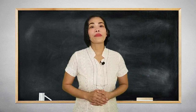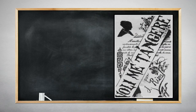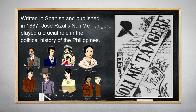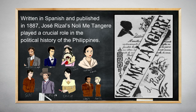Let's study Noli Me Tangere by Jose P. Rizal. Written in Spanish and published in 1887, Rizal's Noli Me Tangere played a crucial role in the political history of the Philippines. Drawing from experience, the conventions of the 19th-century novel, and the ideals of European liberalism, Rizal offered a devastating critique of a society under Spanish colonial rule. The book indirectly influenced a revolution, although Jose Rizal advocated non-violent means and only wanted direct representation to the Spanish government. The book was instrumental in unifying Filipinos against the Spanish colonizers.